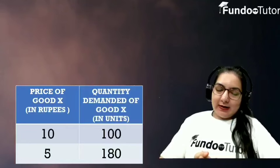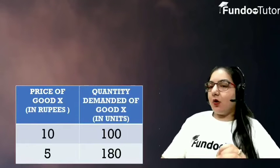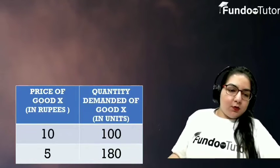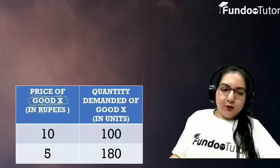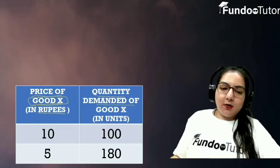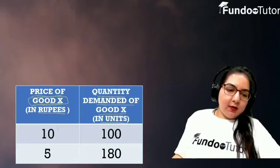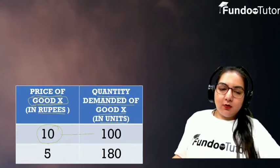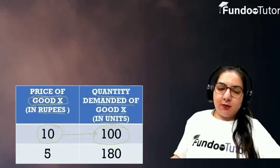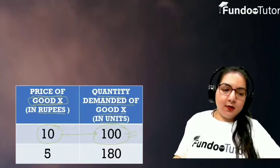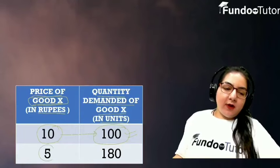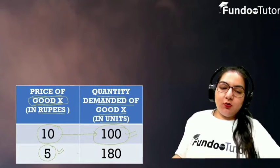Expansion of Demand को समझने के लिए हम सबसे पहले इस schedule को observe करेंगे. यह schedule है Good X के बारे में. हमें क्या-क्या given है? Price of Good X in Rupees and quantity demanded of Good X in Units. आईए observe करते हैं — 10 Rupees का जब price है, तो consumer कितना demand कर रहा है? Consumer demand कर रहा है 100 units of Good X. And when price 5 Rupees हो गया, तो consumer demand कर रहा है 180 units.